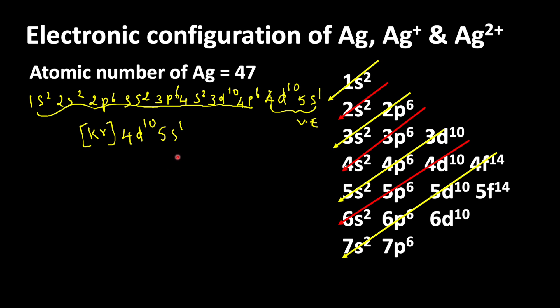Let us use the same condensed electronic configuration for Ag plus and Ag 2 plus ions. Ag plus ion is a cation which is formed when silver loses one electron. So the maximum number of electrons available in Ag plus ion is 46.